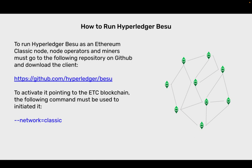How to run Hyperledger Bezu: to run Hyperledger Bezu as an Ethereum Classic node, node operators and miners must go to the following repository on GitHub and download the client: https://github.com/hyperledger/bezu. To activate it pointing to the ETC blockchain, the following command must be used: --network=classic.